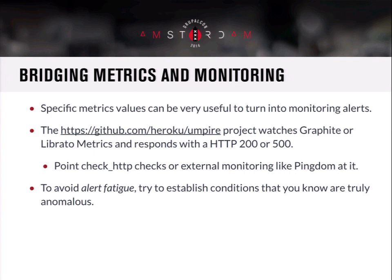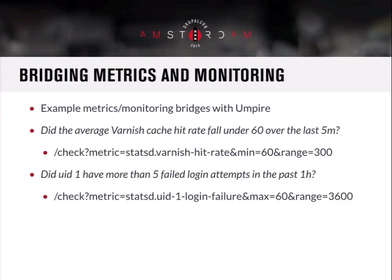One really neat thing — and there's an open source tool that lets you do this — is to bridge metrics and monitoring. A certain trend will tend to show you that you're going to have some sort of problem in the future. There's a great project written in Ruby by Heroku called Umpire. What Umpire lets you do is watch Graphite or Librato Metrics — whatever your metric system is — and it'll respond with either a 200 or a 500 depending on whether the metric is in or out of the bounds you specified. You have to be careful with this — make sure the alerts you're putting in actually have value, because muted noisy alerts can lead you to miss something important.